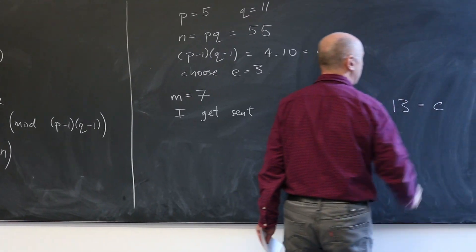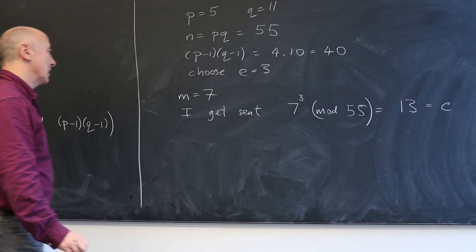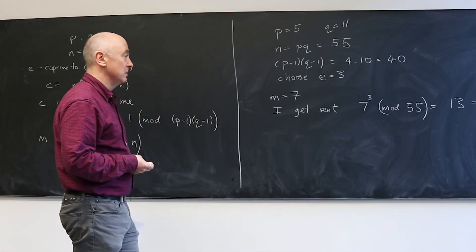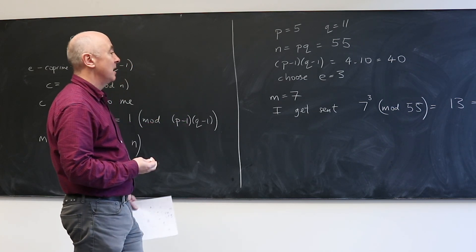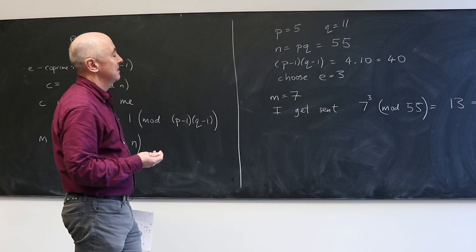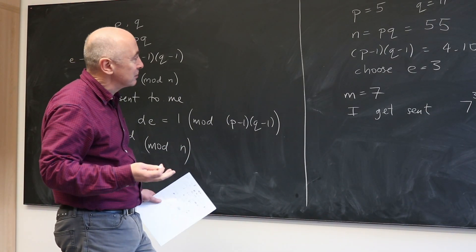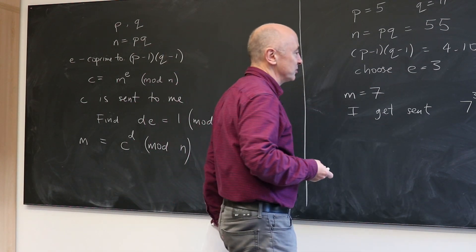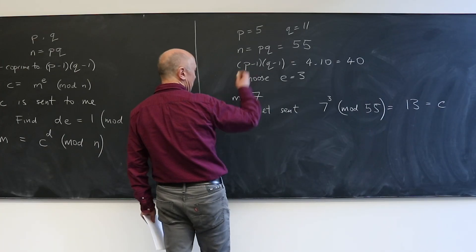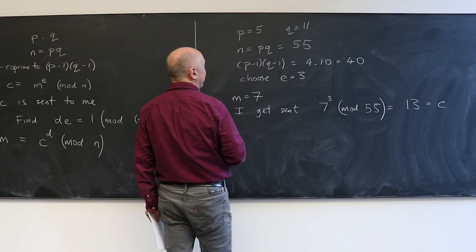That's the encrypted number. And somebody who, if they were to intercept this, they'd see 13 and they'd want to try to understand how to go from 13 to 7. But that's difficult unless you know P and Q, as I'm going to demonstrate.